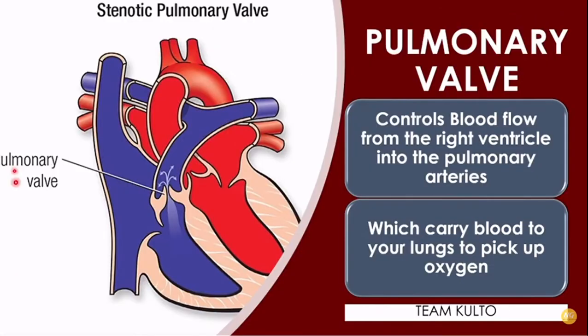Next, we have the pulmonary valve. The pulmonary valve controls blood flow from the right ventricle into the pulmonary arteries, which carries blood to the lungs to pick up oxygen. The oxygen here — the blood is deoxygenated — and it goes to the lungs in order for the blood to be oxygenated.